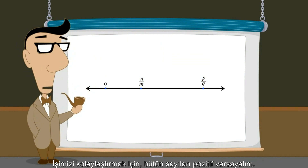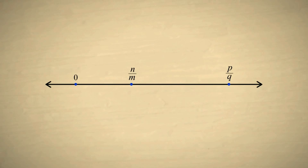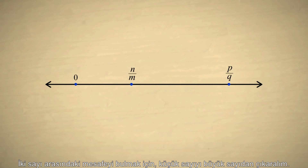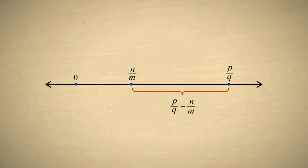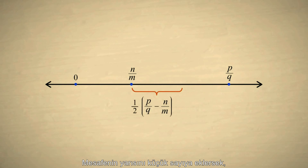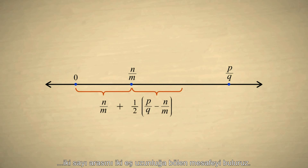To make it simple, let's assume that both these numbers are positive. To get the distance between these two numbers, we subtract the smaller number from the larger number. Now if we add half that distance to the smaller number, we get the distance from the origin to the point halfway between the two numbers.